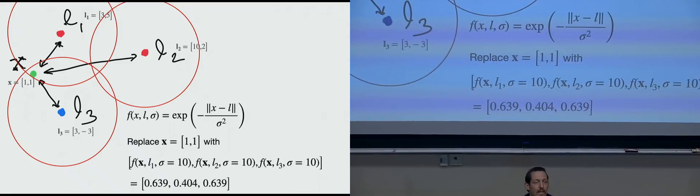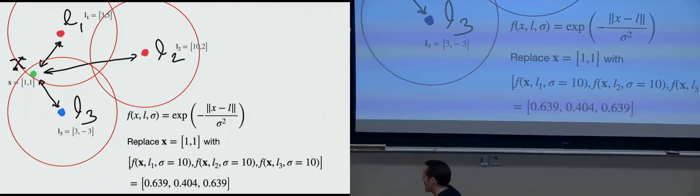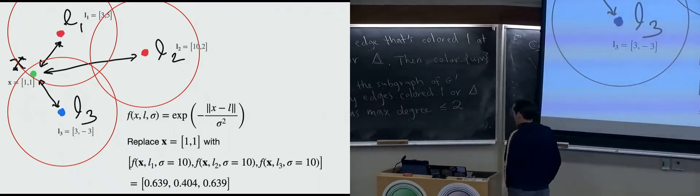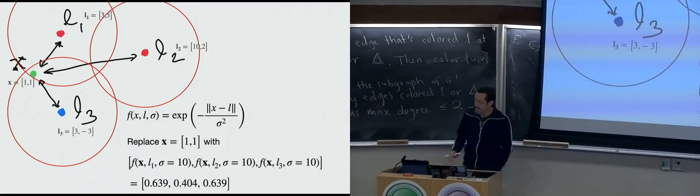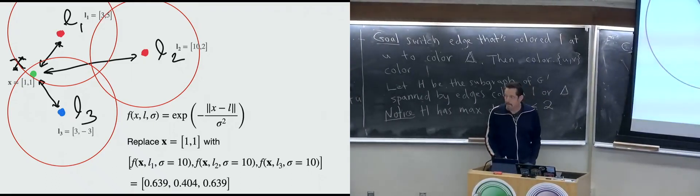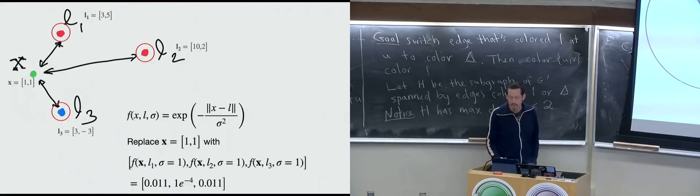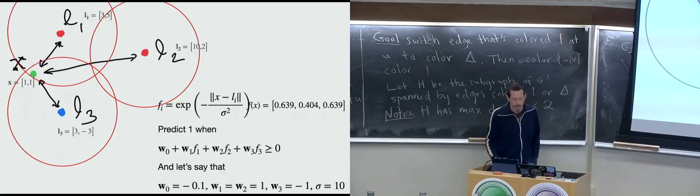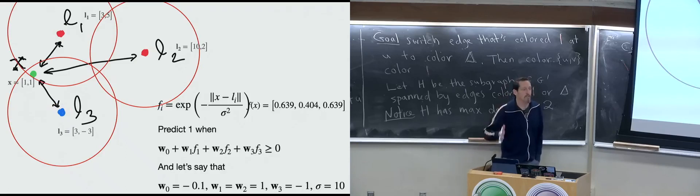Think of it like a smoothness term rather than a statistical standard deviation — how much smoothing do we want to do? It's not a statistical standard deviation fit on an empirical data set. So we've made a nonlinear transformation, and that nonlinear transformation has a hyperparameter. But again, this is still just a linear algorithm.